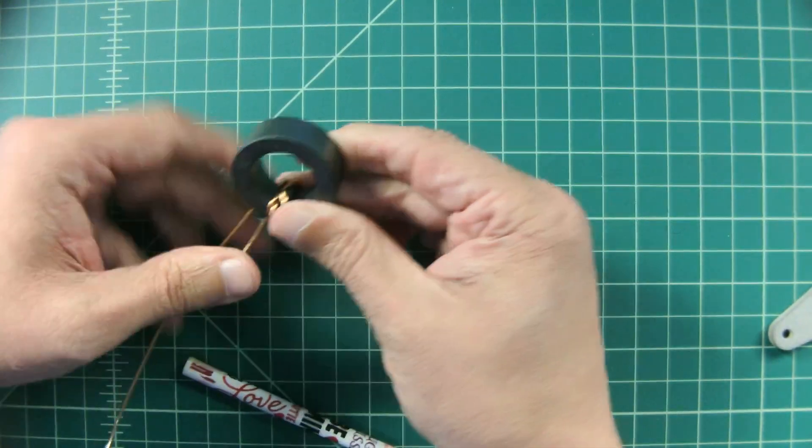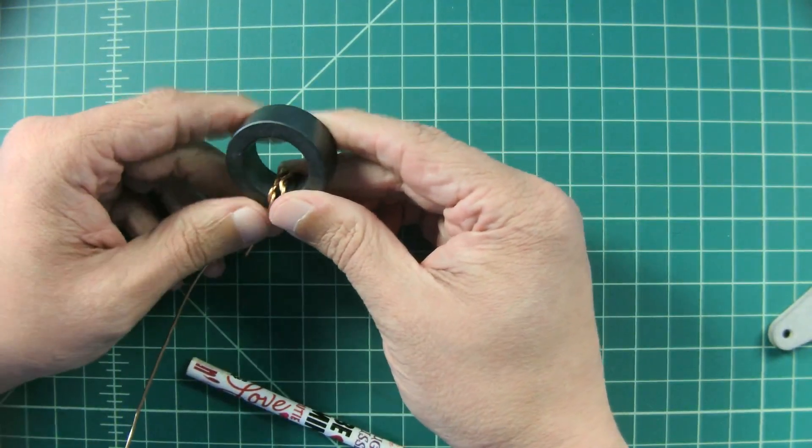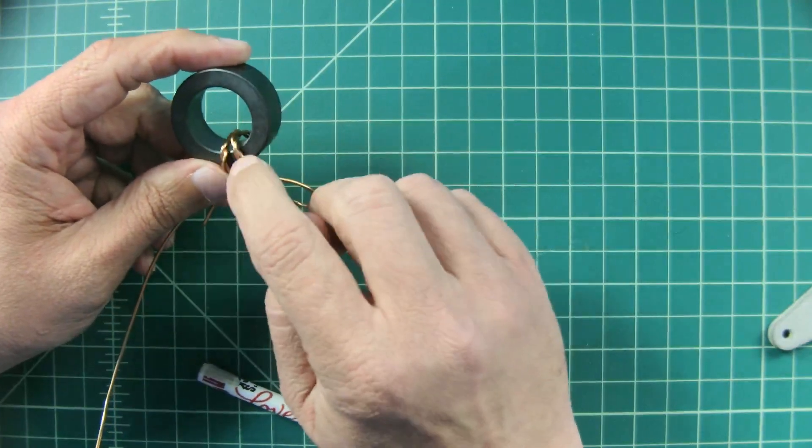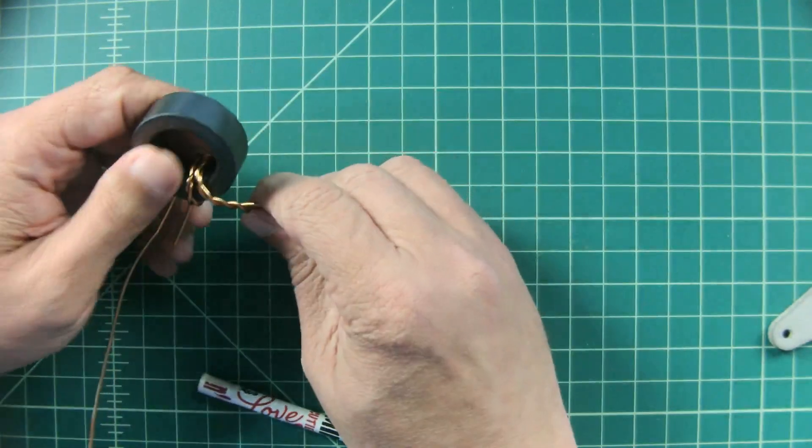Now what I need to do for my secondary is 12 more windings. So I'll have a total of 14 windings: two in the primary, 12 on the secondary.